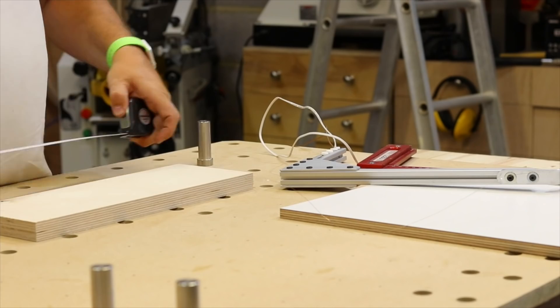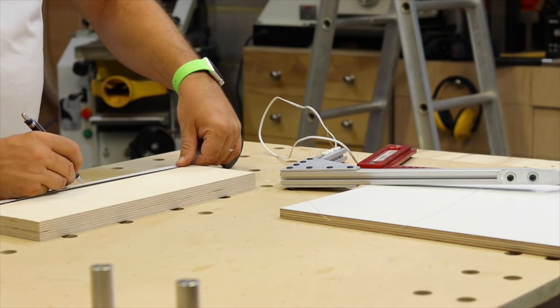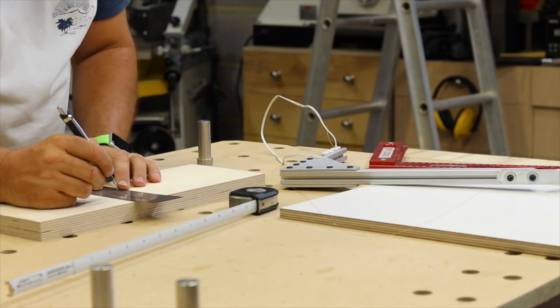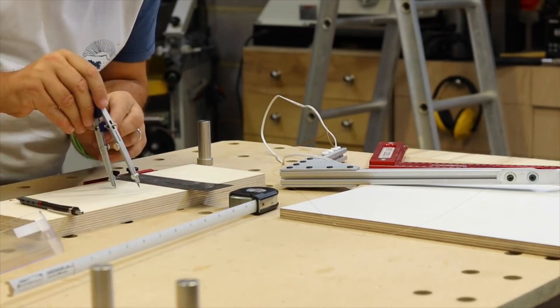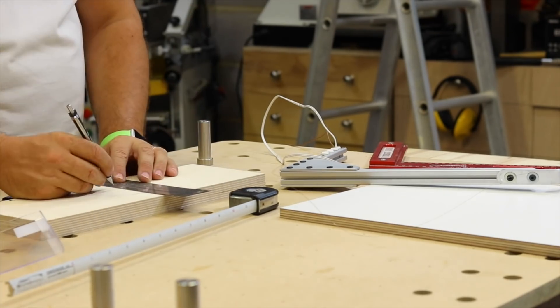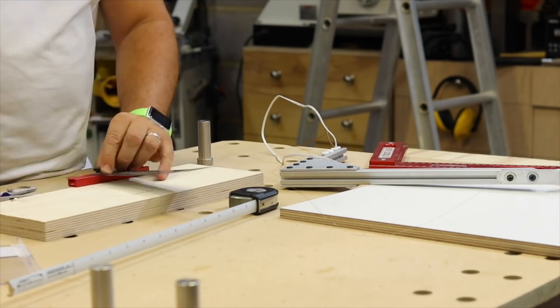So just using some 24mm birch ply as the back piece of the foam cutter, and this will hold the pivot arm, so there will be an arc cut out of this and a center hole to pivot and lock the arm. And I'm just marking it up now ready for cutting at the band saw.